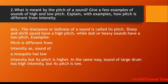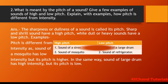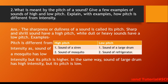Similarly, the sound of a large drum has high intensity but its pitch is low. So pitch is totally different from intensity. Examples of high pitch sound are the sound of a siren and the sound of a mosquito. Examples of low pitch sound are the sound of a large drum and the sound of a refrigerator.